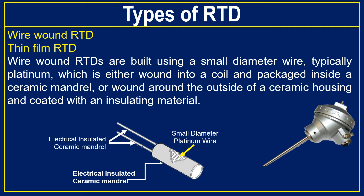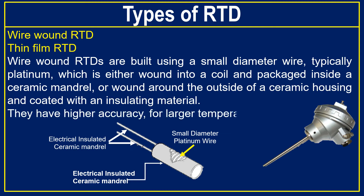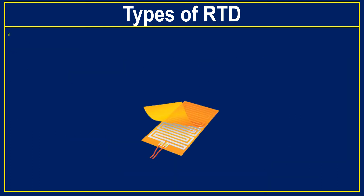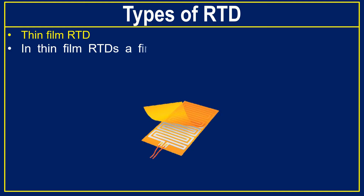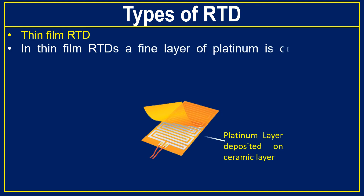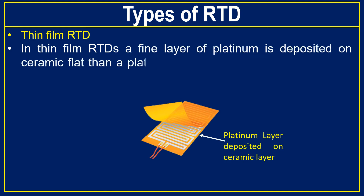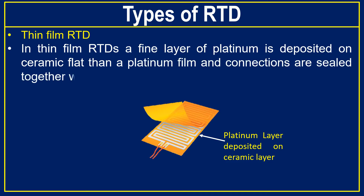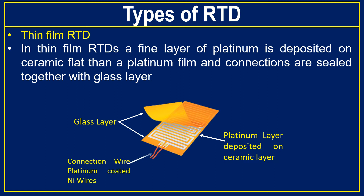Wire wound RTDs have higher accuracy for a larger temperature range. In thin film RTDs, a fine layer of platinum is deposited on a ceramic flat, then a platinum film and connections are sealed together with a glass layer. Thin film RTDs have lower accuracy compared to wire wound RTDs.